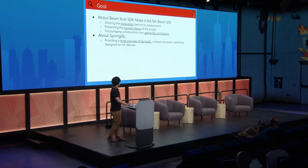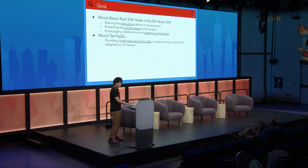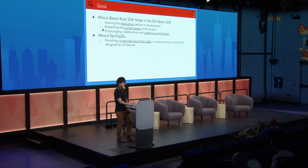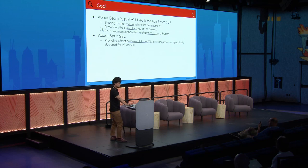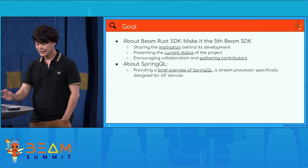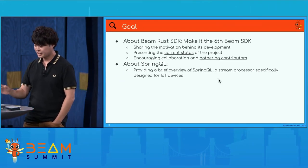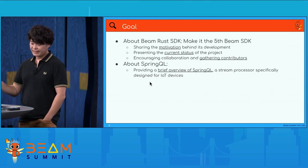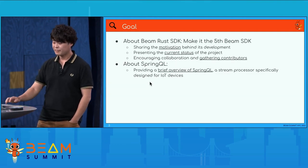Today's goals are as follows. First, about Beam Rust SDK, we would like to make it the fifth Beam SDK, so I would like to share the motivation behind its development and present the current status of the project and encourage collaboration and gather contributors. About SpringQL, it is a stream processor specially designed for IoT devices, and I would like to provide a brief overview of it.